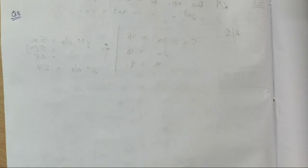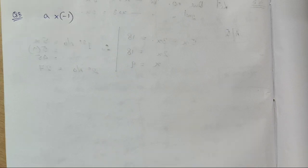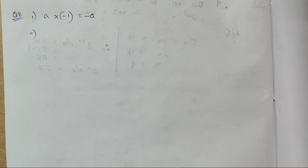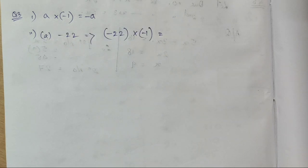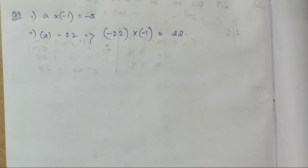In question 3 we need to find what happens when 'a' is multiplied with -1 — the result is simply -a. For the second part, we verify with given numbers: if a = -22, then -22 × -1 = 22. Also note that 0 × -1 = 0, because 0 is neither positive nor negative.